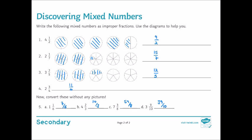But of course we want to find a general technique. We don't want to be drawing diagrams out every time. So let's go back to question 1, 4 and a half. We know that each whole contains two halves. So we had one set of 2, another set of 2, a third set of 2, and then a fourth set of 2.